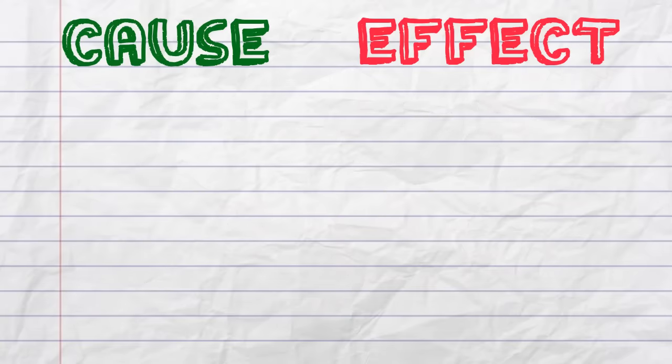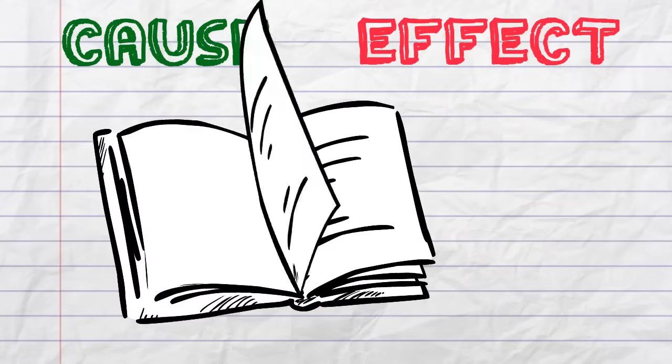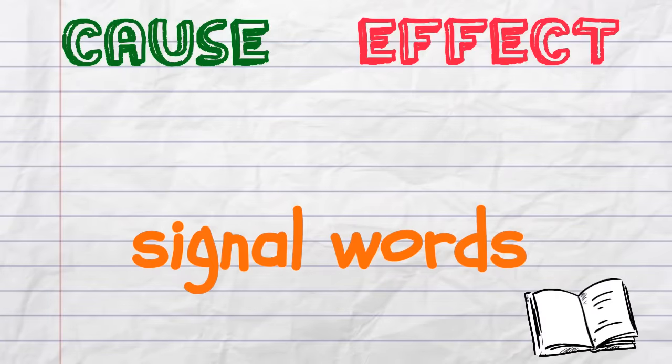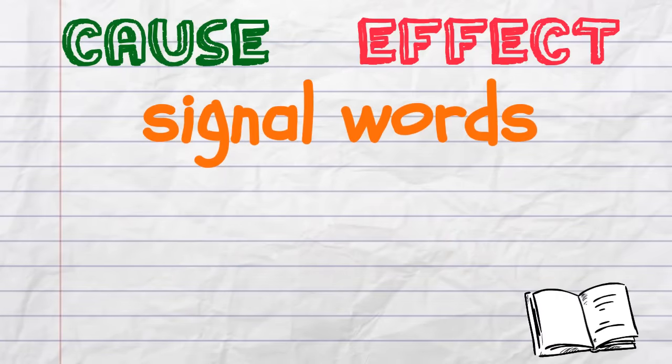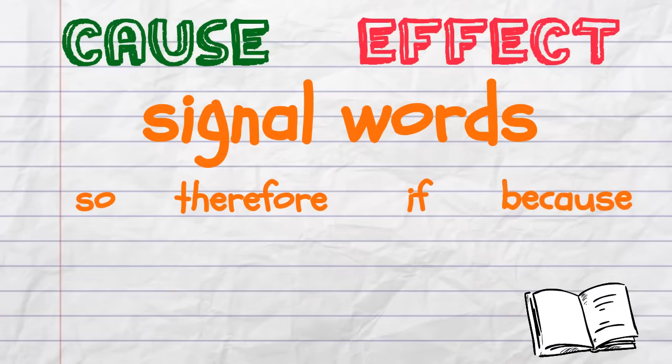An easy way to spot cause and effect relationships in books is to look out for signal words. Cause and effect signal words tell the reader that there might be cause and effect occurring. Here are some cause and effect signal words and phrases you might come across.